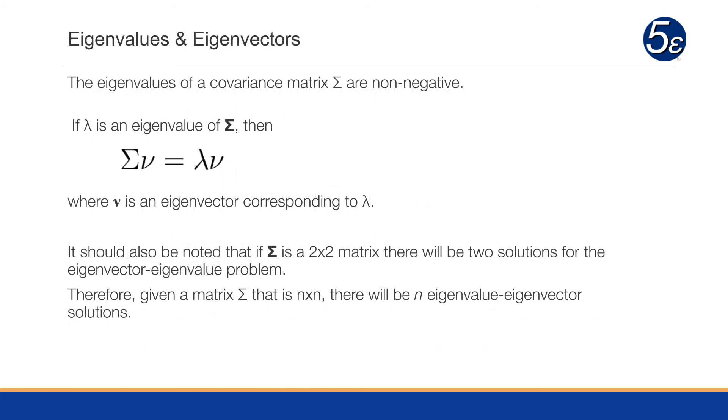The eigenvalues of a covariance matrix are non-negative, always. So if lambda is an eigenvalue of the covariance matrix, then sigma times nu is equal to lambda times nu, where nu is that corresponding eigenvector to lambda.